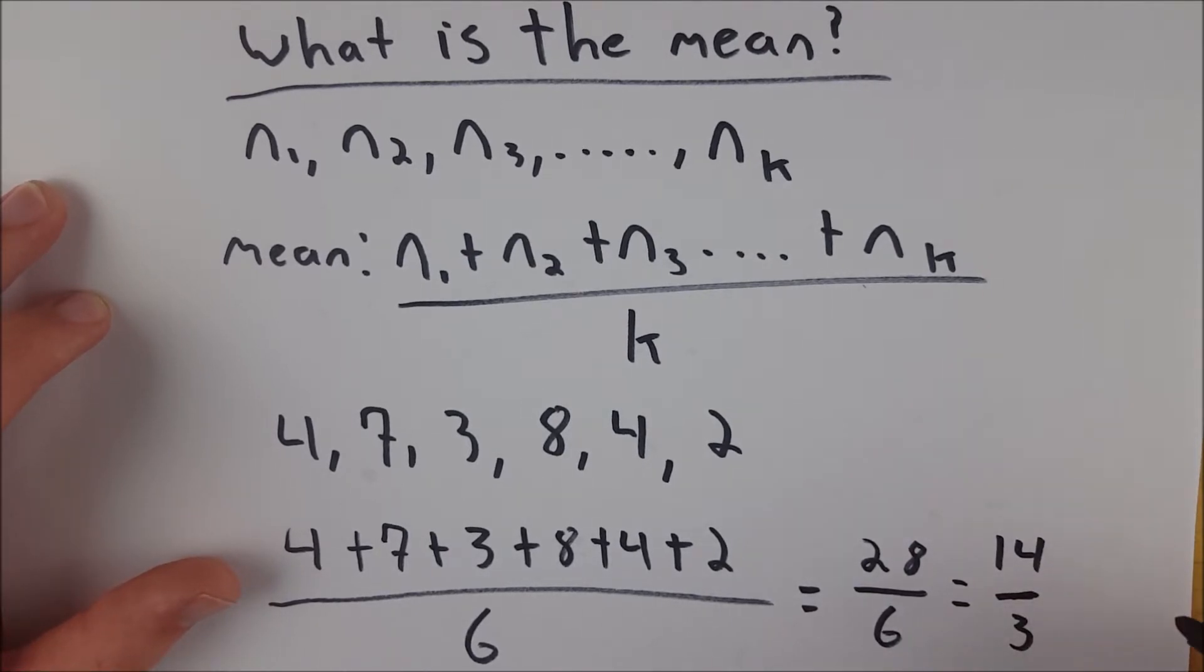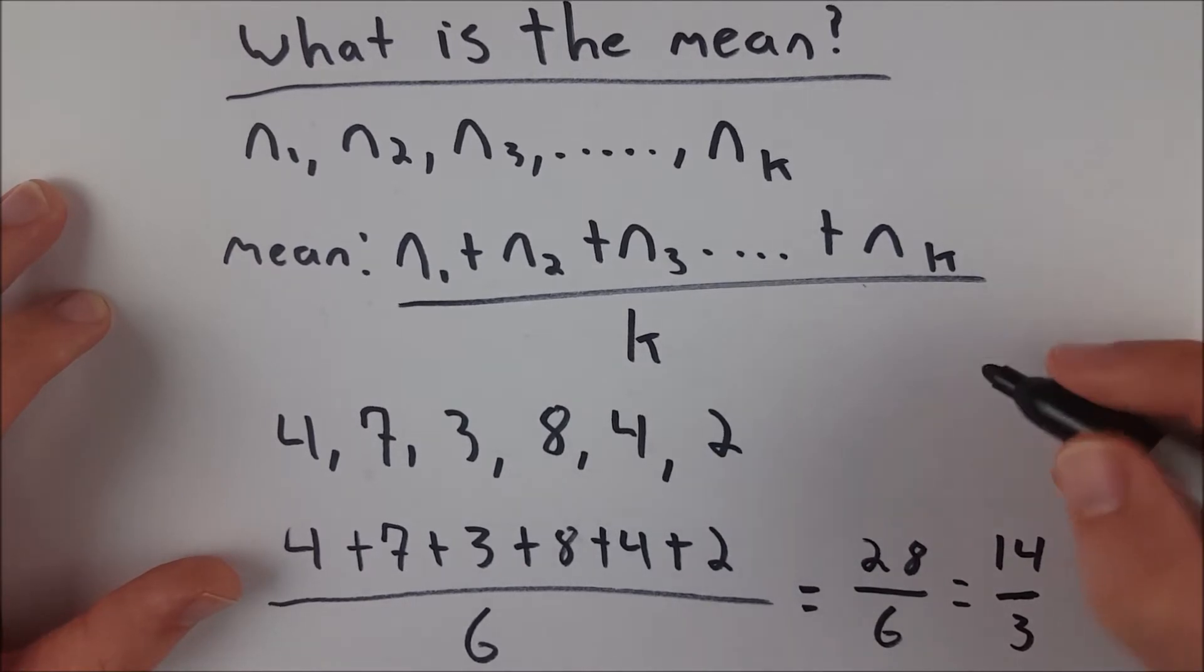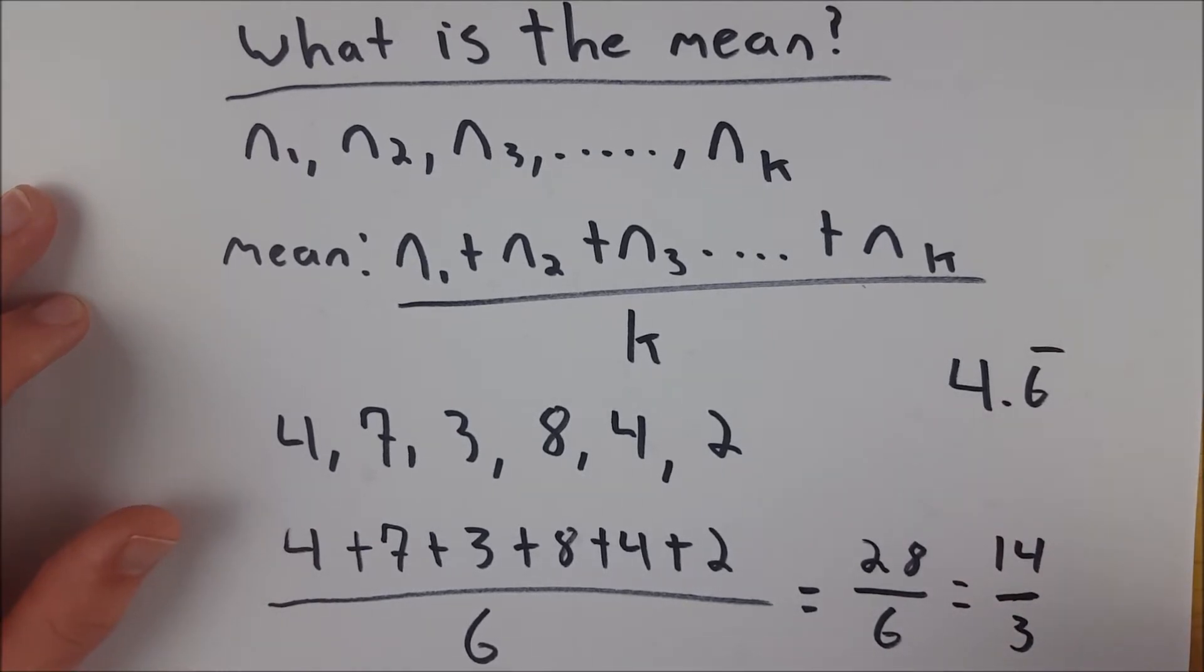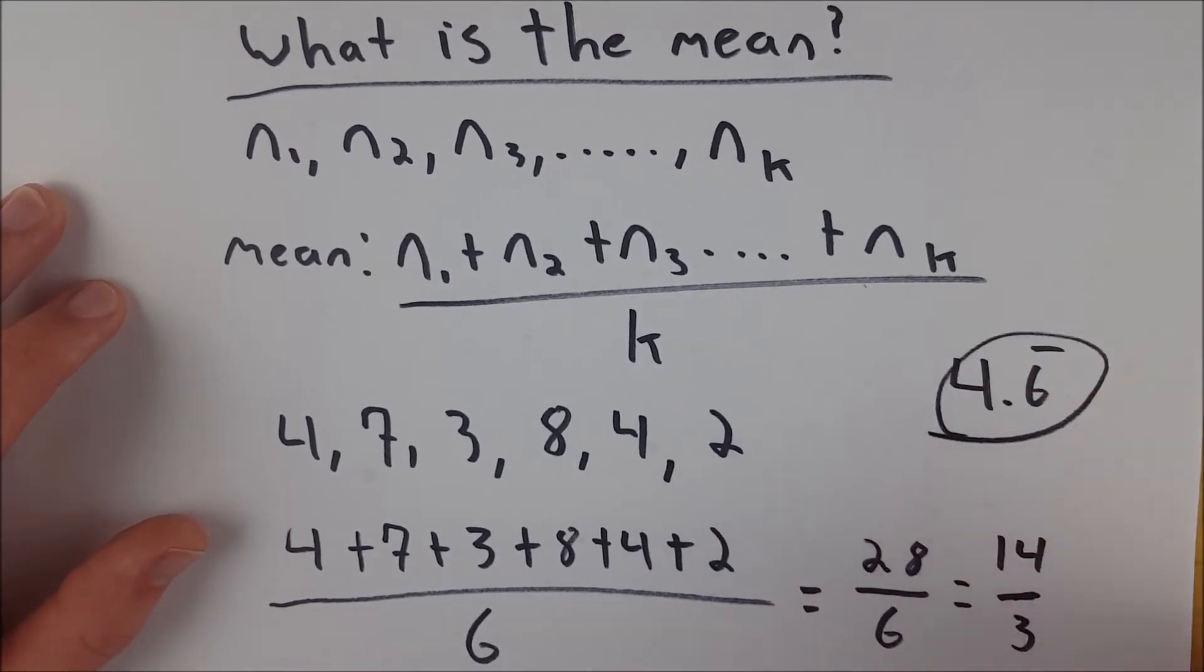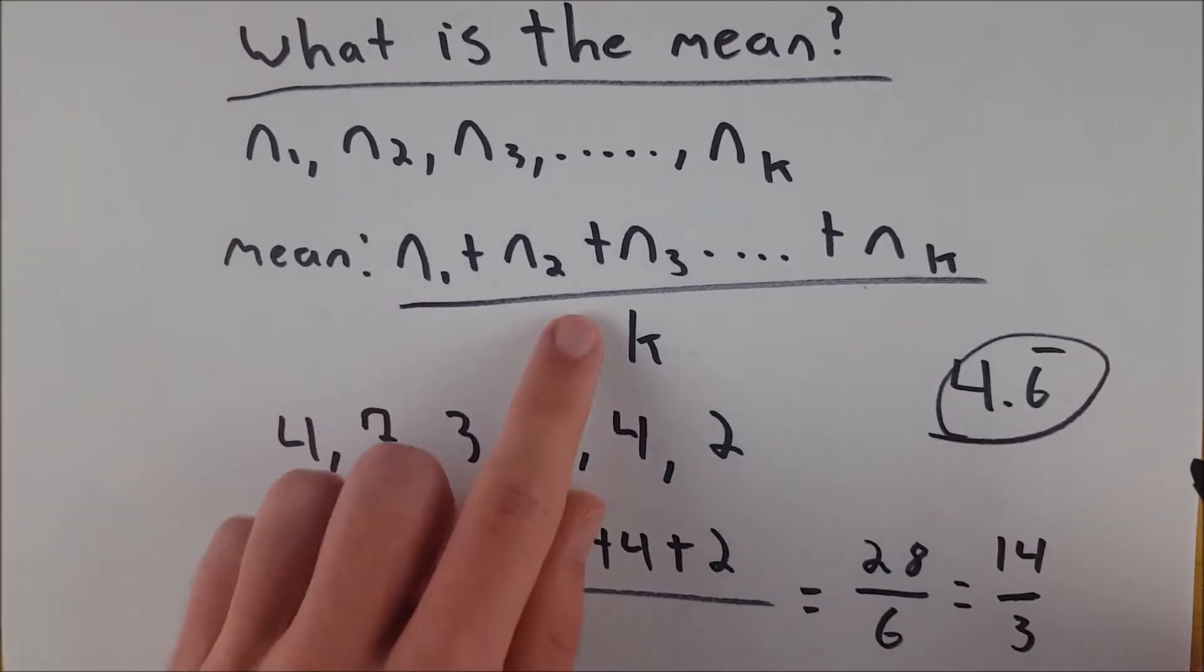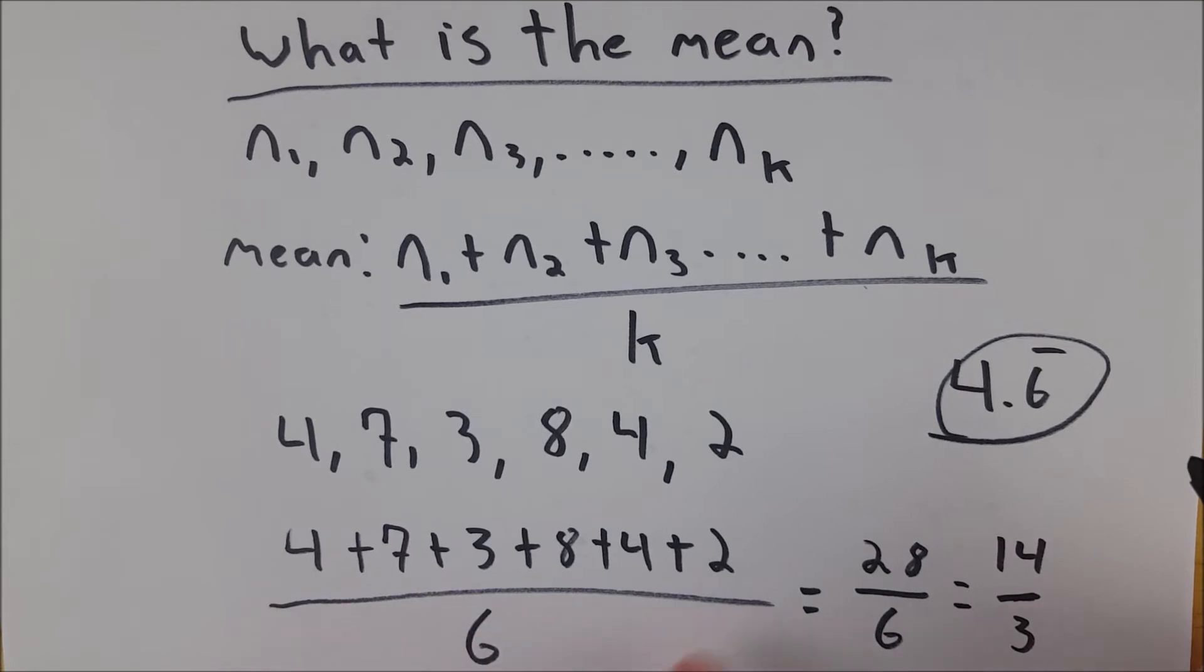And then that is our final answer, which in statistics, we would usually write in decimal form. So we can write this as 4.6 repeating, because that is equal to four and two thirds, which is four and six repeating. So that is our mean 4.6 repeating, that's how you find it, add up all your data points, divide by the total number of data points as we did here.